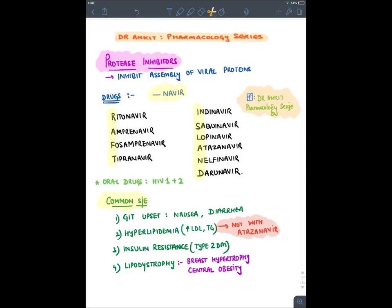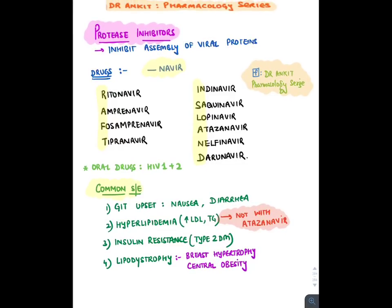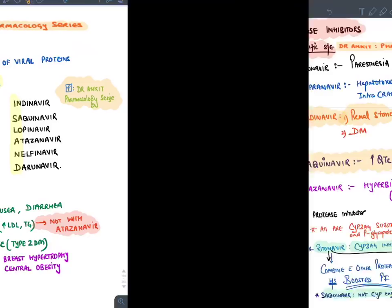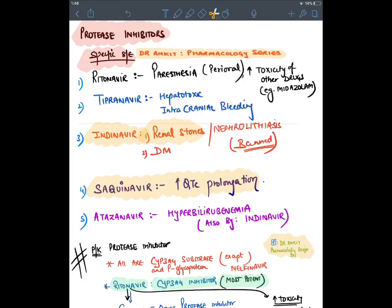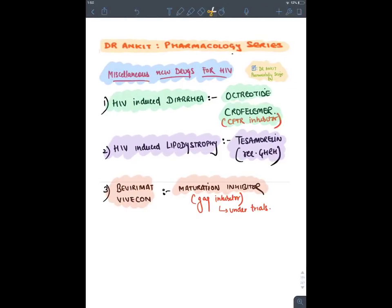Protease inhibitors inhibit assembly of viral protein and all end in '-navir' — mnemonic RAFT ISLAND. Common side effects: GI upset; hyperlipidemia (increased cholesterol, LDL, triglycerides — NOT seen with Atazanavir); insulin resistance; lipodystrophy (central obesity, breast fat accumulation). Specific effects: Ritonavir — paresthesia, CYP inhibitor (increases toxicity of other drugs); Tipranavir and Indinavir — renal stones; Saquinavir — QT prolongation; Atazanavir — hyperbilirubinemia. All protease inhibitors are CYP3A4 substrates; Ritonavir is the maximum CYP inhibitor except Nelfinavir. 'Boosted PI' = Ritonavir + another protease inhibitor.